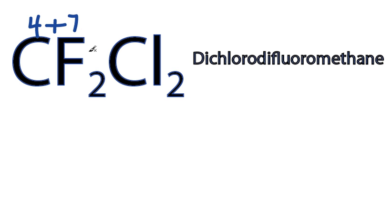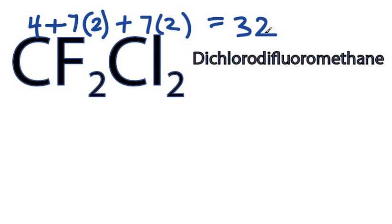Fluorine, group 7, sometimes called 17. But we have 2 of those, so let's multiply that times 2, plus chlorine is in group 7, and then we've got 2 of those as well. So 32 valence electrons to work with.